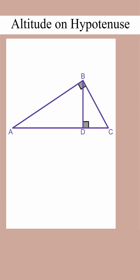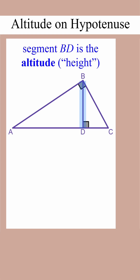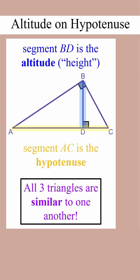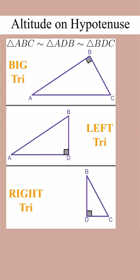The altitude on hypotenuse triangle looks like this, where segment BD is the altitude and segment AC is the hypotenuse. All three triangles are similar to one another. If we break up the triangle into its three triangles, it is far easier to see the corresponding angles.